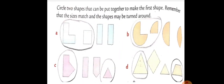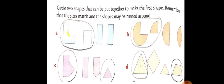Circle two shapes that can be put together to make the first shape. Remember that the size, match, and shape may be turned around. Yahan par A mein yeh four shapes di hain, usmein se koi bhi two shapes lene hain jisse ek shape bana sake. Yeh shape hai — usko iske baaju mein rakh do toh yeh rectangle ho jaayega. Waise hi yeh four aapko complete karne hain. Understood?